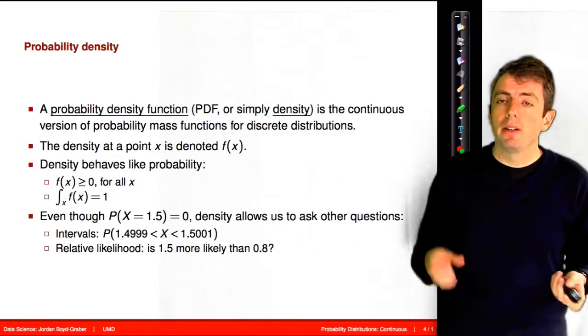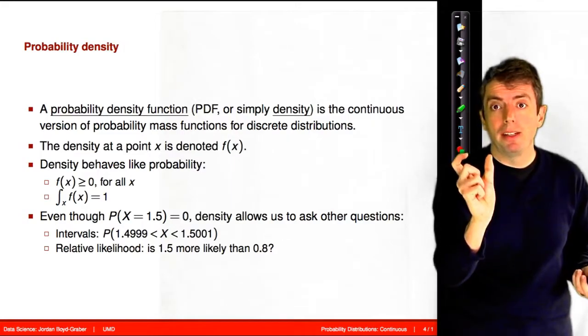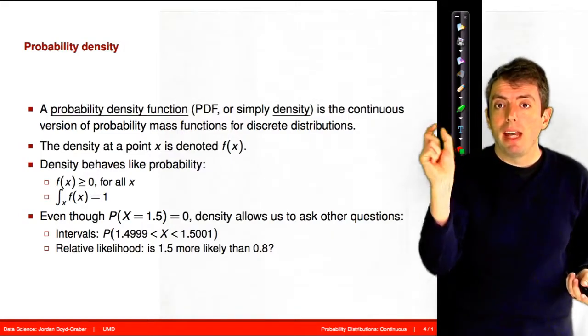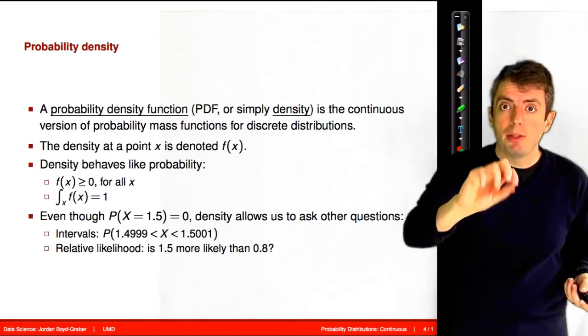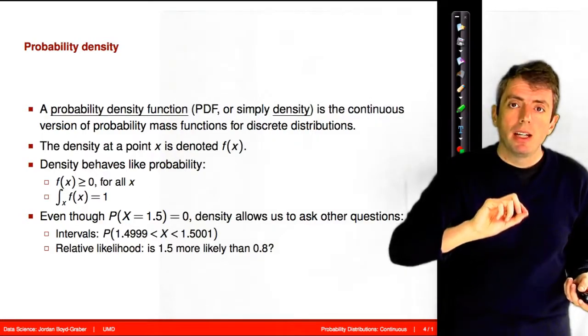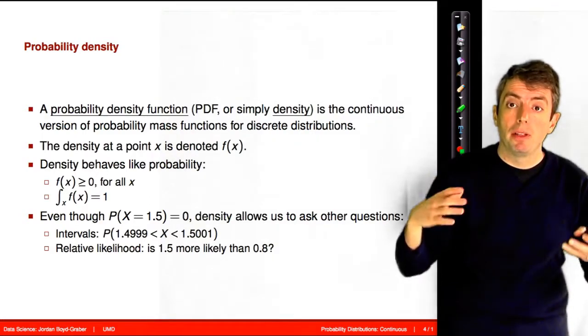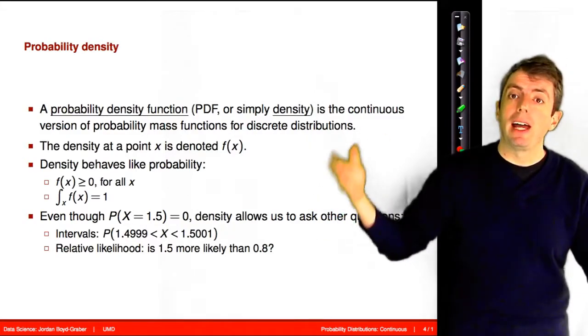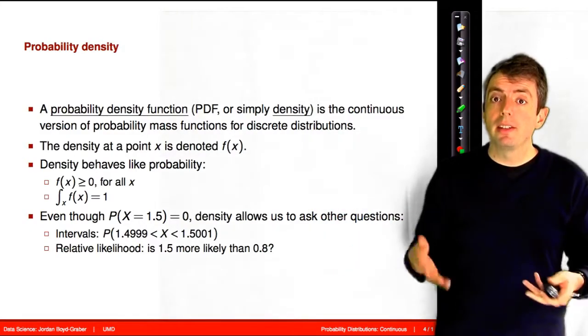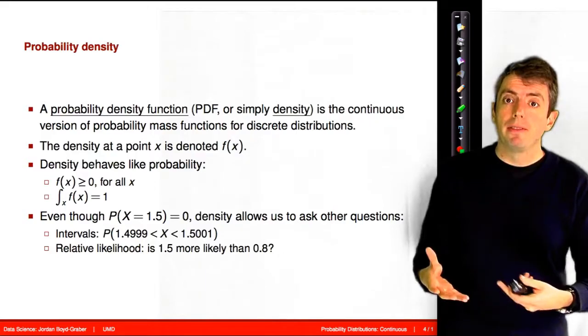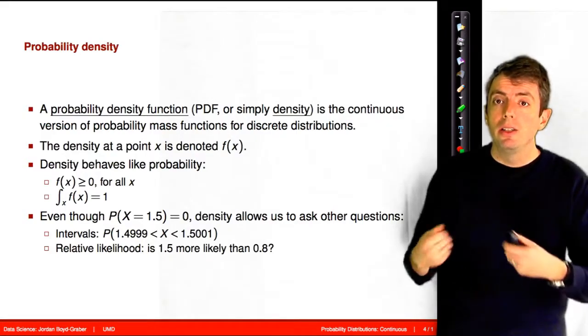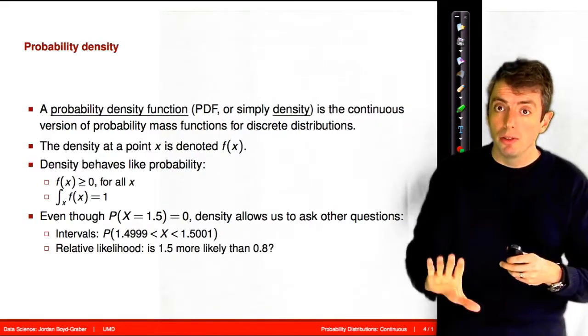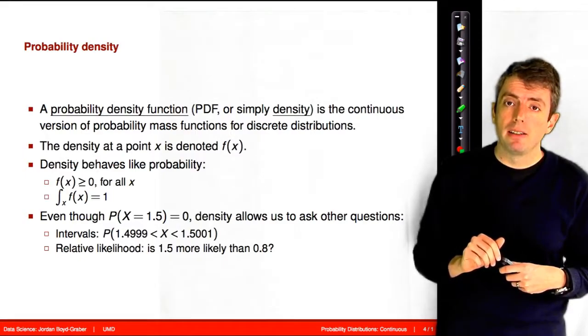And even though if you evaluate the probability density function at an individual point, you will get a probability of 0, you can ask questions like, what is the probability of getting a value between, say, 0 and 1? This is a lot like discrete probability functions where we talked about unions and disjunctions. We'll see a little bit more of that in a second.